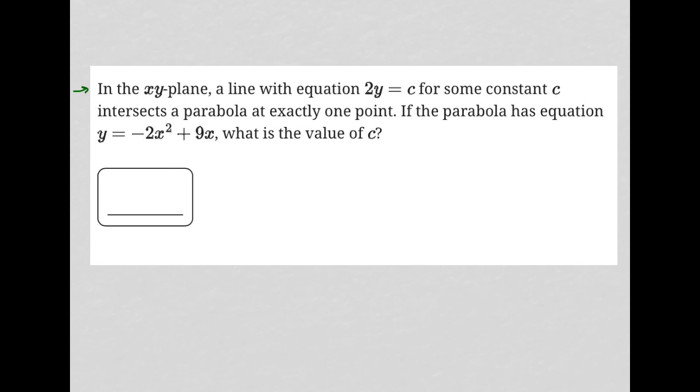This question says in the xy-plane, a line with equation 2y = c for some constant c intersects a parabola at exactly one point. If the parabola has equation y = -2x² + 9x, what is the value of c? So a couple of things to deal with here.